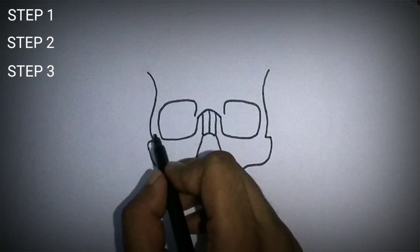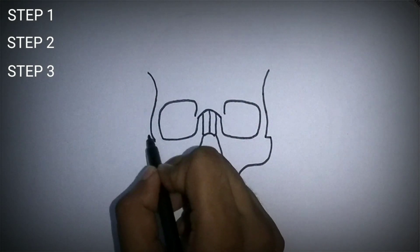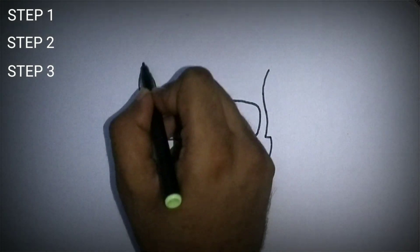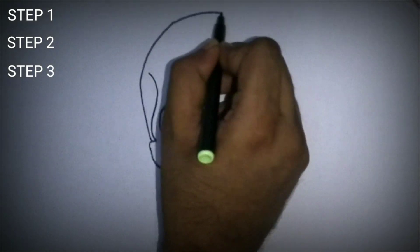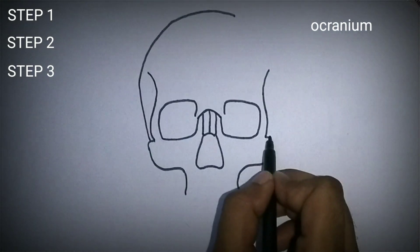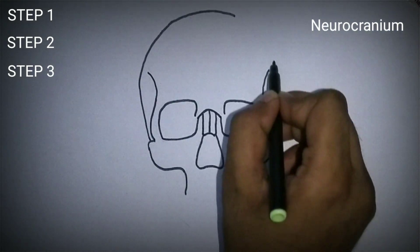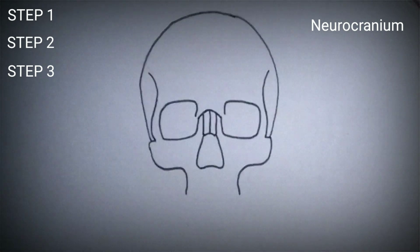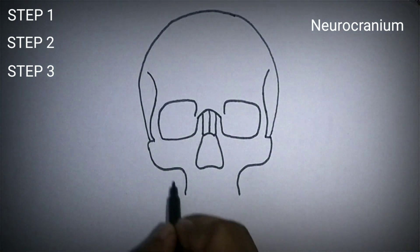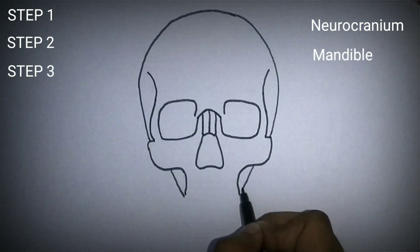In the third step, draw an oval shape which represents the neurocranium and the mandible.